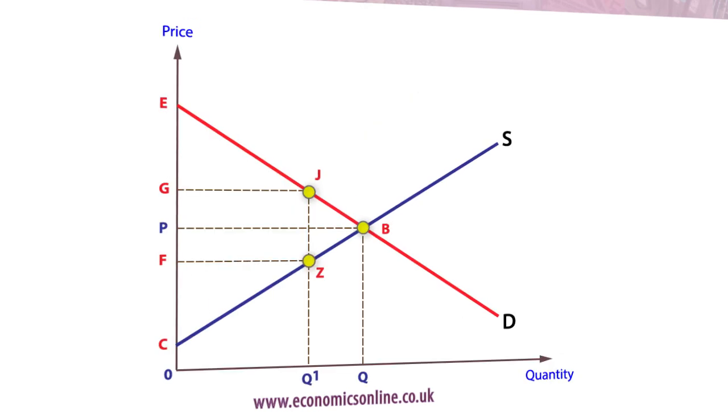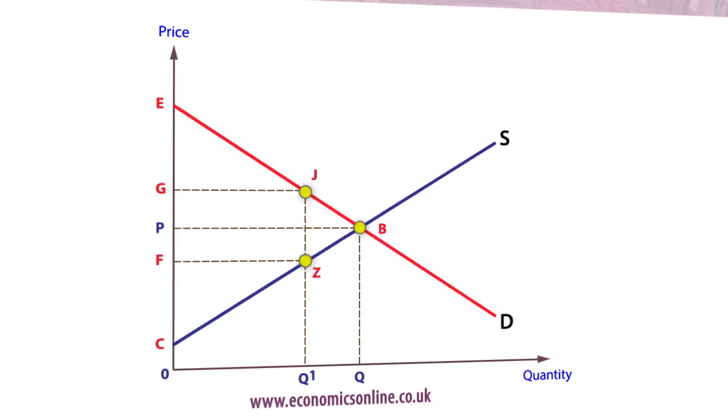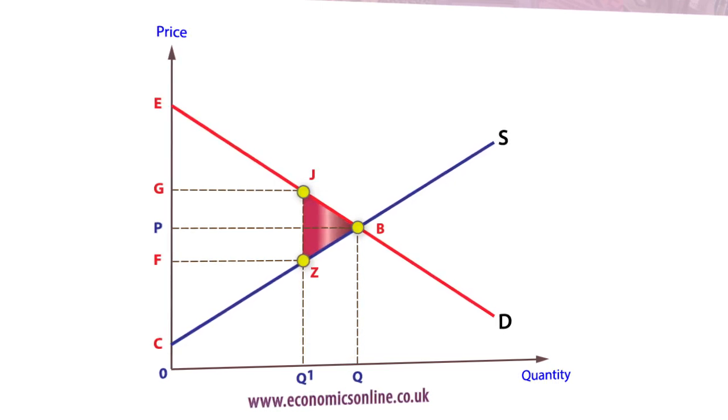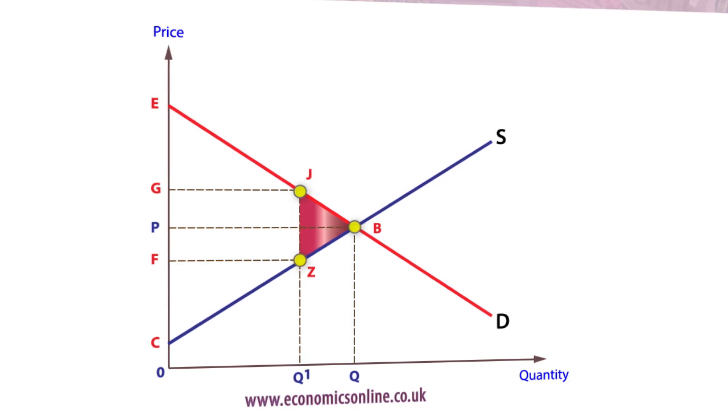In this example, equilibrium provides the greatest surplus. This is shown as the area E, B, and P. At a higher price, such as G, welfare is reduced to the area E, J, Q1 and 0. This is because demand contracts from B to J. The welfare loss is shown as the area J, B, and Z.